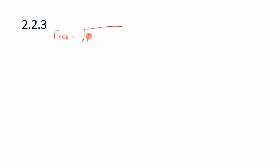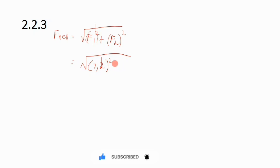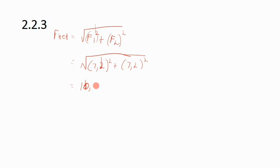The net electrostatic force is calculated as F_net = √(F1² + F2²). Substituting: F_net = √(7.2² + 7.2²). Punching this into the calculator gives 10.18 Newtons. That is the magnitude of the net electrostatic force on B.